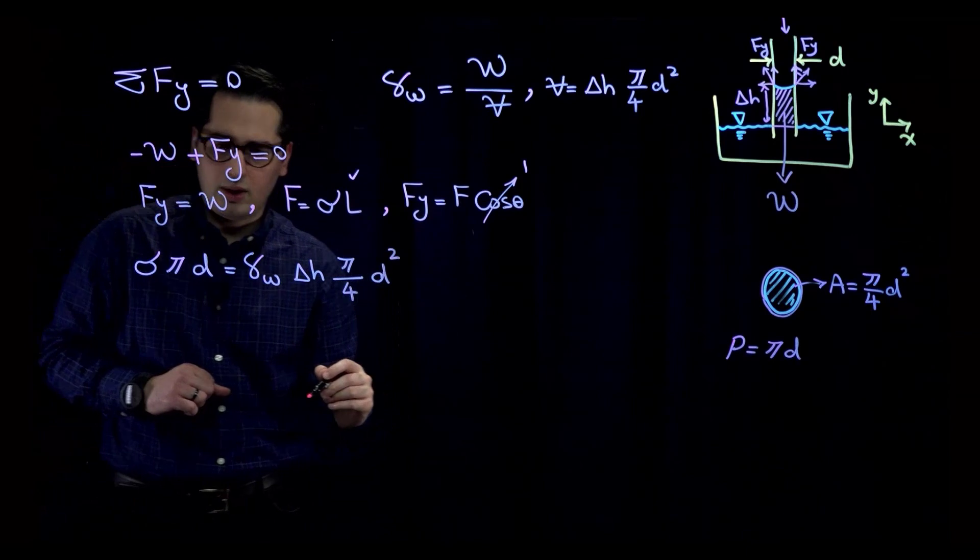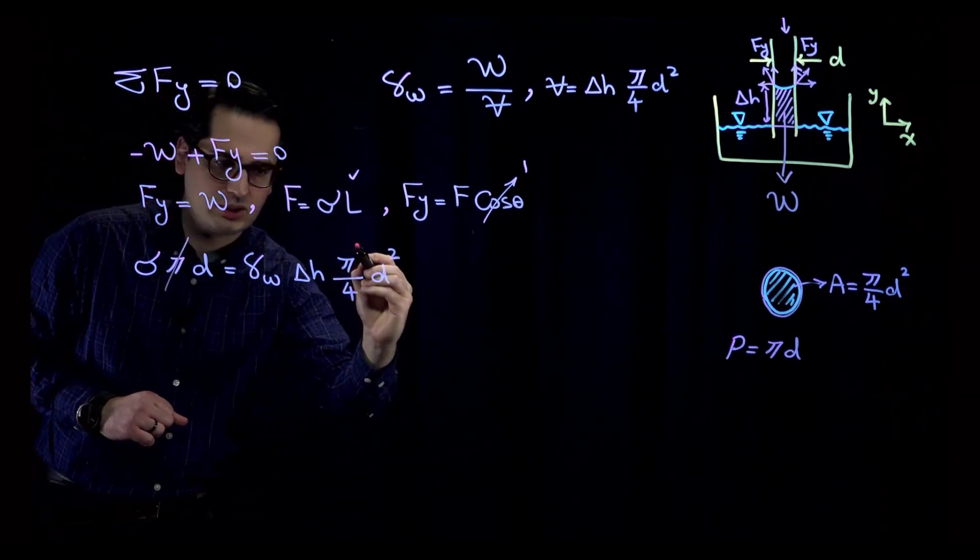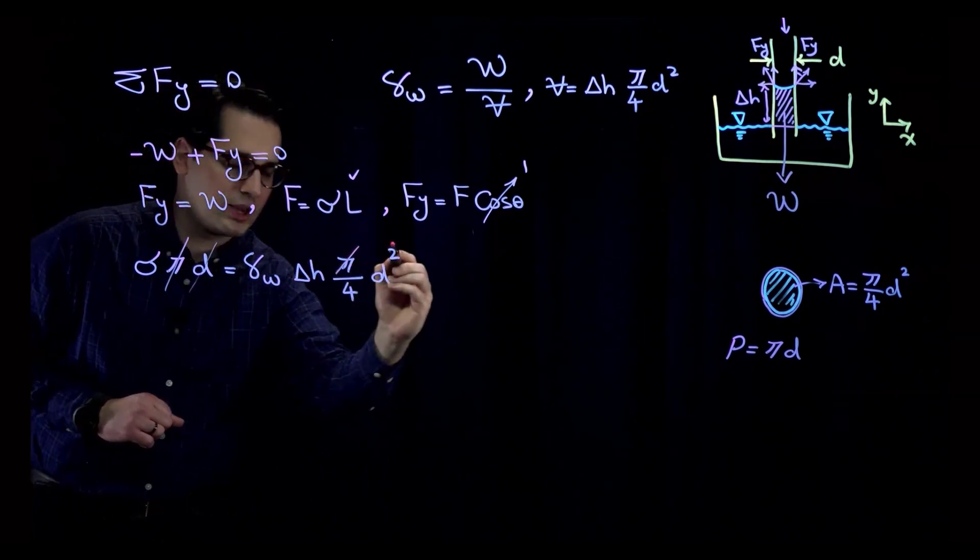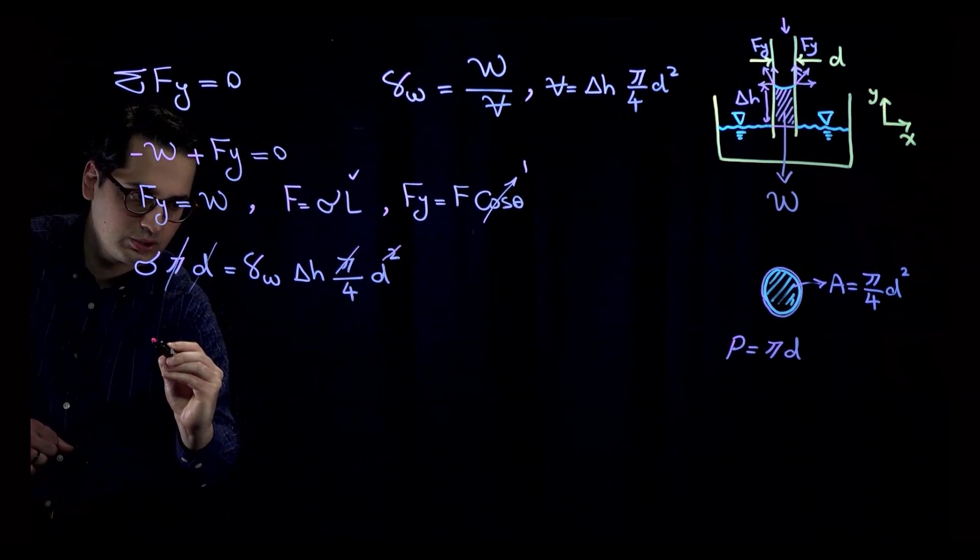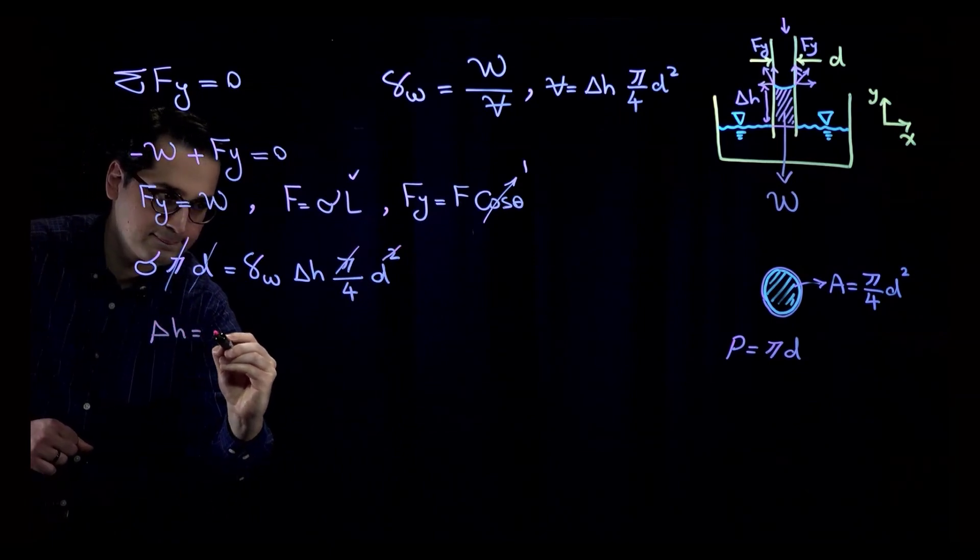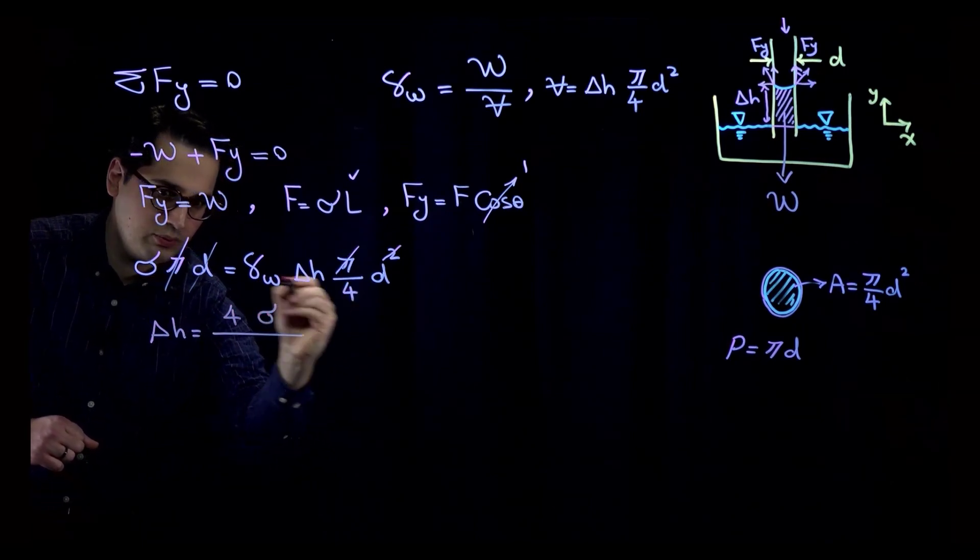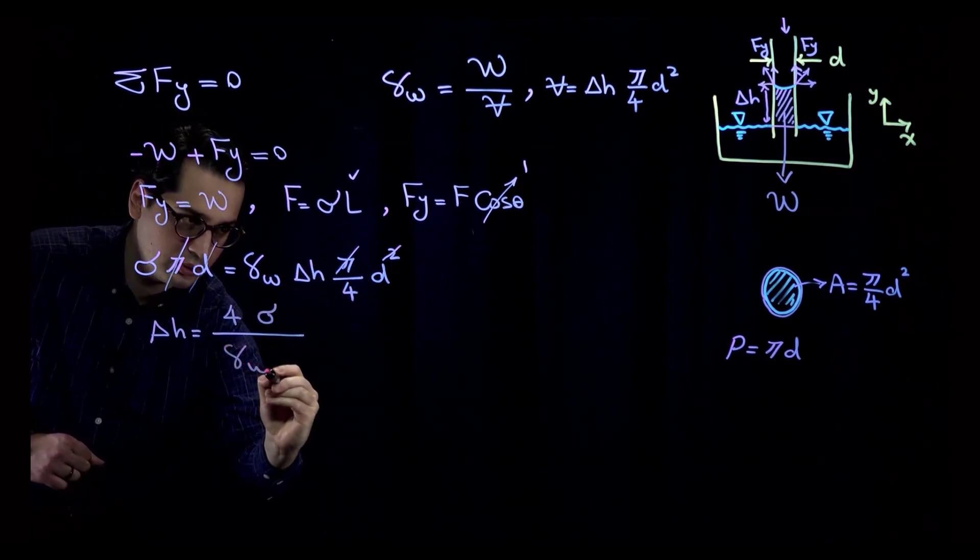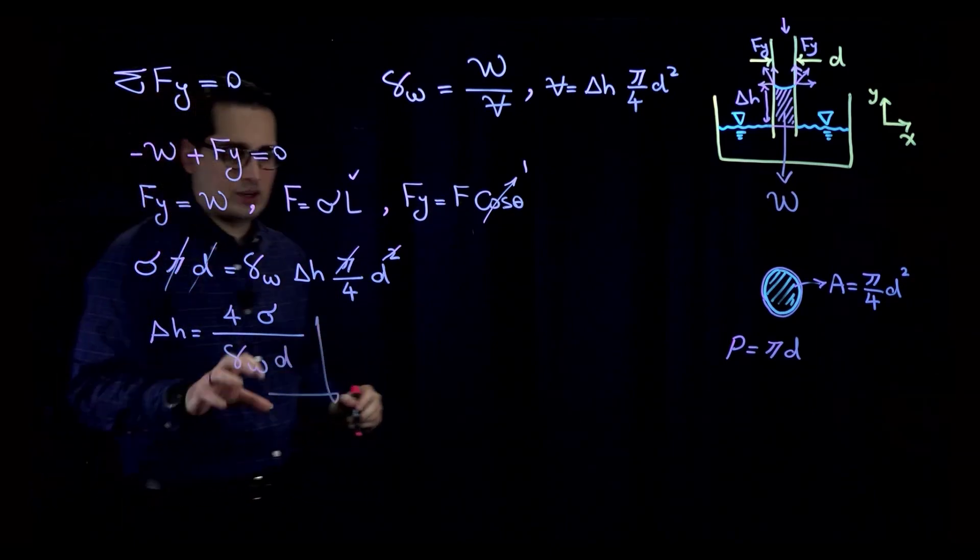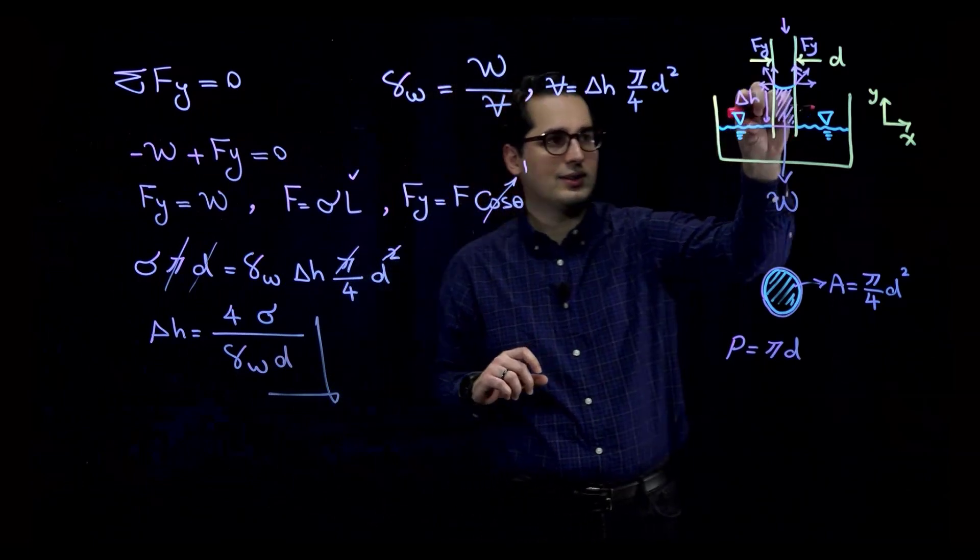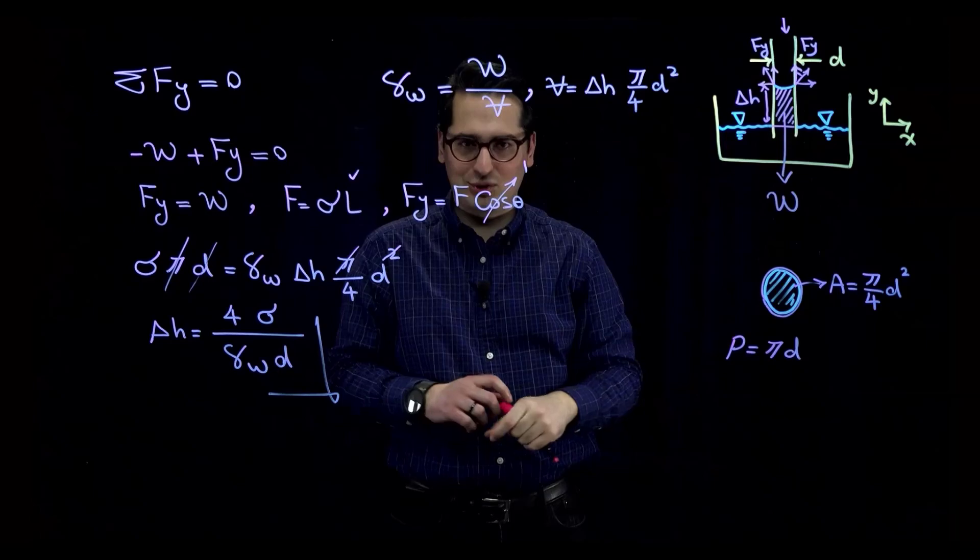So specific weight times volume is delta H times pi divided by 4 times diameter to the power 2. We can simplify this. This pi is going to be cancelled out with this one. This diameter is going to be cancelled out with the power of D over here. Now I can write delta H equals 4 sigma divided by gamma_W times D. So this is the equation that you can use to figure out delta H or the height that water rises within the straw.